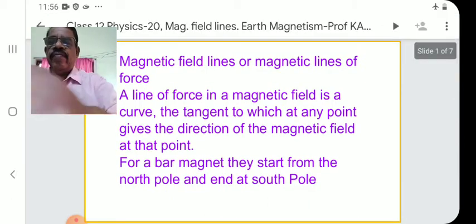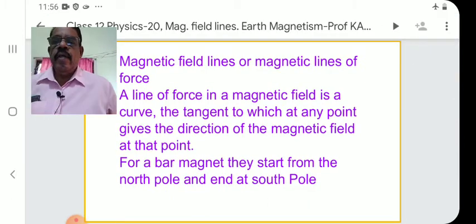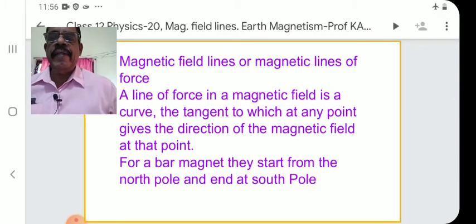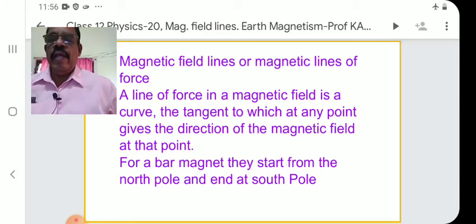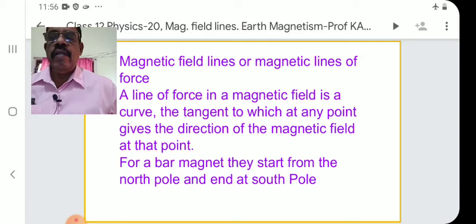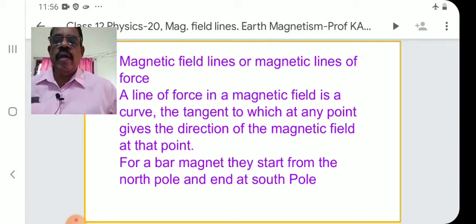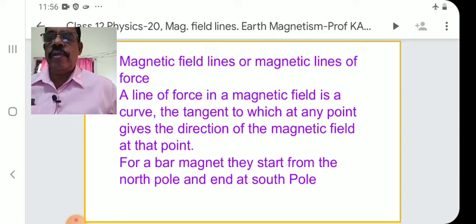What are Magnetic Field Lines? Magnetic Field Lines, or Magnetic Lines of Force — a line of force in a magnetic field is a curve, the tangent to which, at any point, gives the direction of the magnetic field at that point.